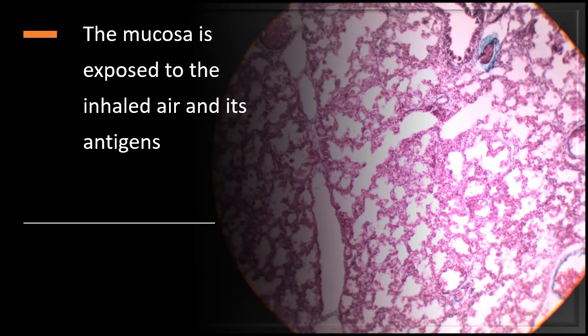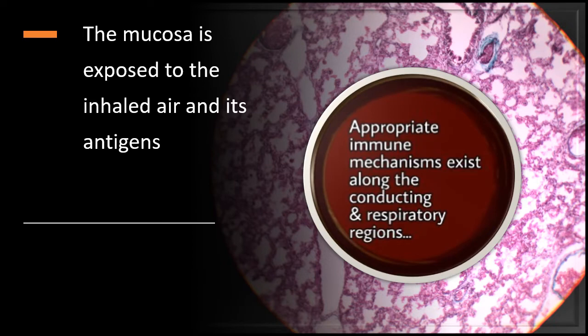The mucosa here is so thin, and not only thin — it is immediately in contact with inhaled air and whatever antigens are brought along with it. This is a very important point. Similar to the concept discussed for pharyngeal tonsils, because of this close interface between inhaled air and the thin mucosa, appropriate immune mechanisms are built in along the conducting and respiratory regions — macrophages, local cells able to identify antigenic characteristics, and so on.